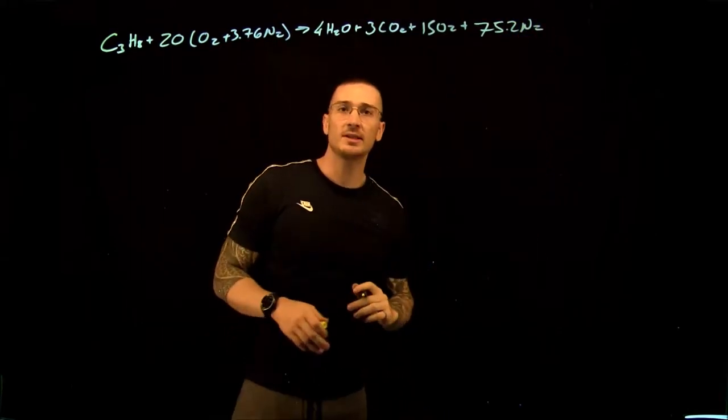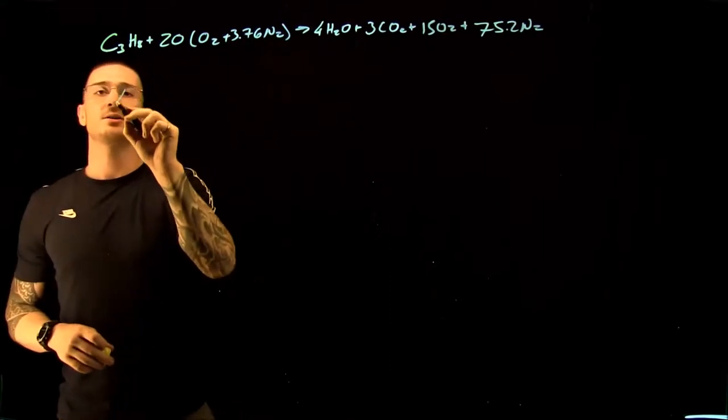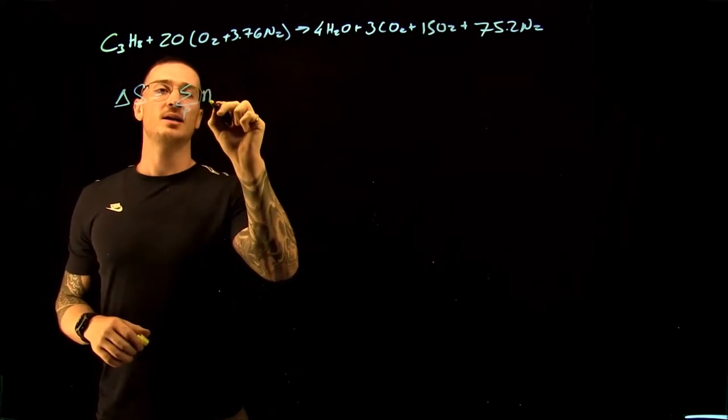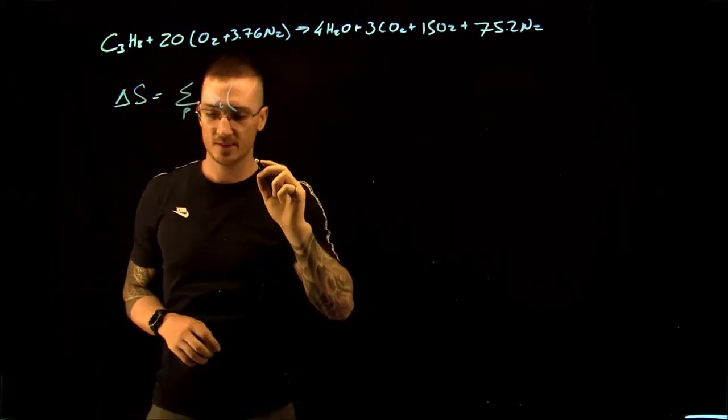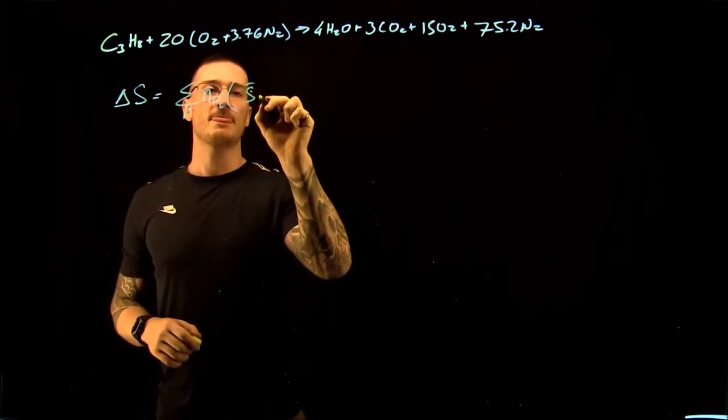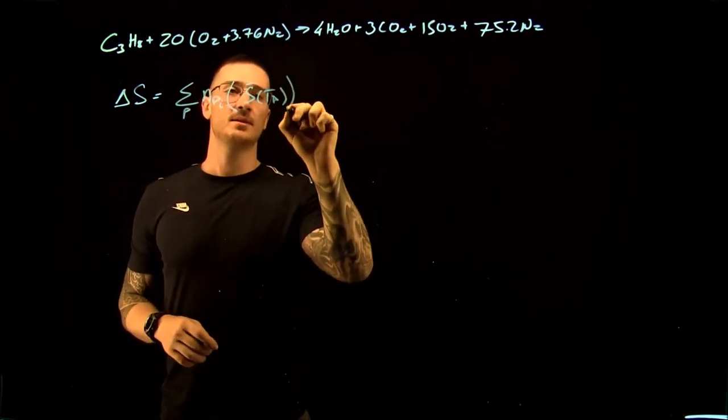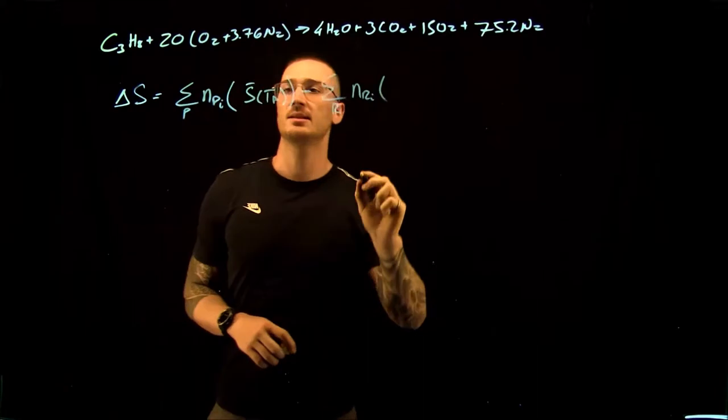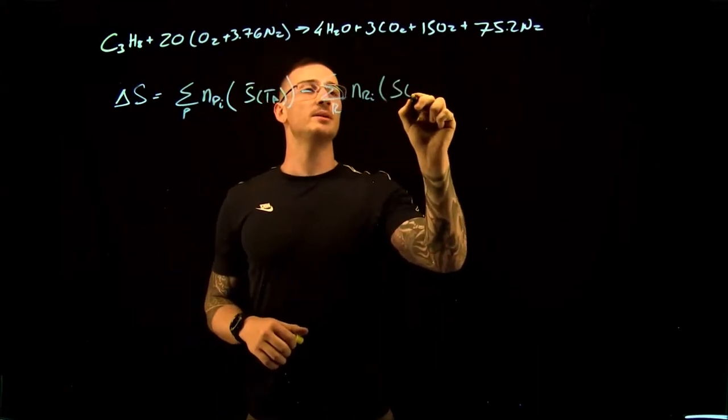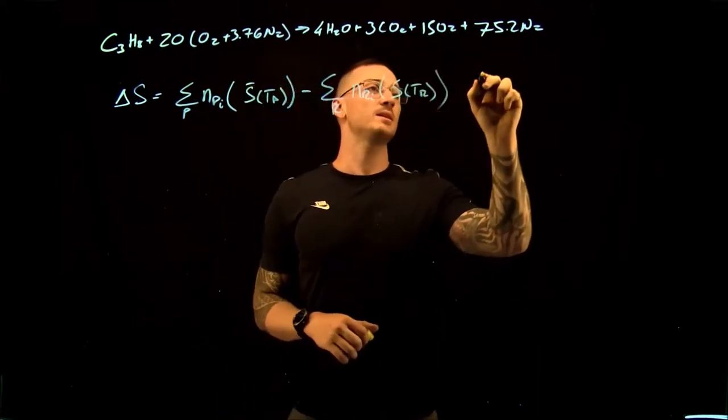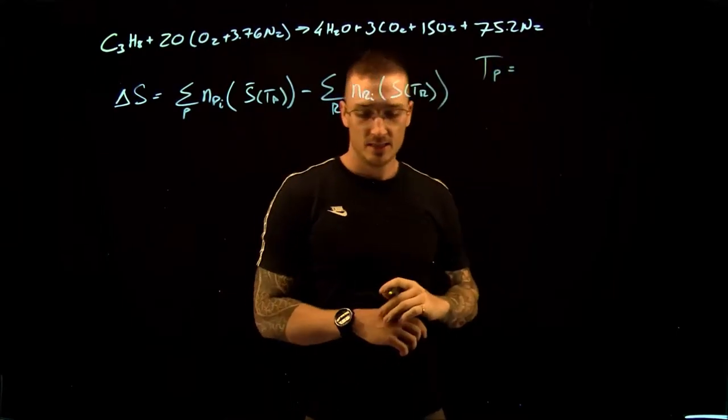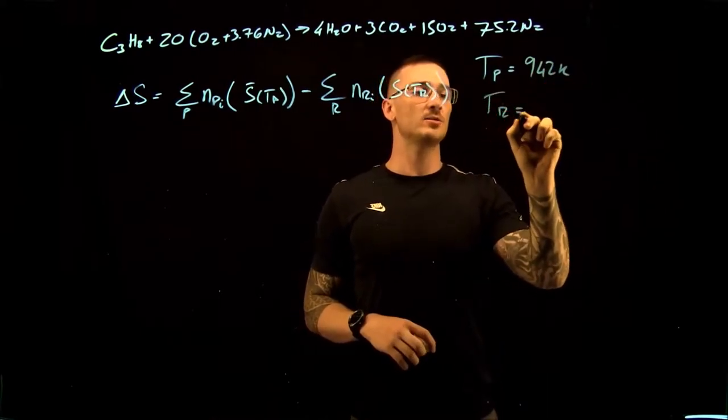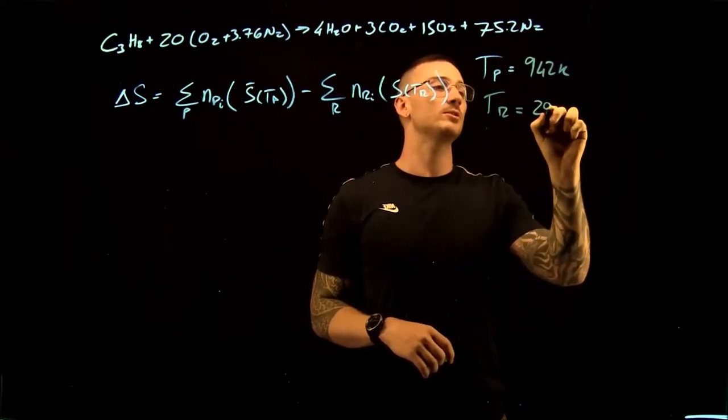Now we're looking at the entropy change. We can say that our change in entropy is equal to the sum for all of our products times the number of moles of that specific product times the entropy at the temperature of the products, minus the sum for all of our reactants times the number of moles of that specific reactant times the entropy at the temperature of our reactants. The temperature of our products is 942 Kelvin, and the temperature of our reactants is 25 degrees C or 298 Kelvin.